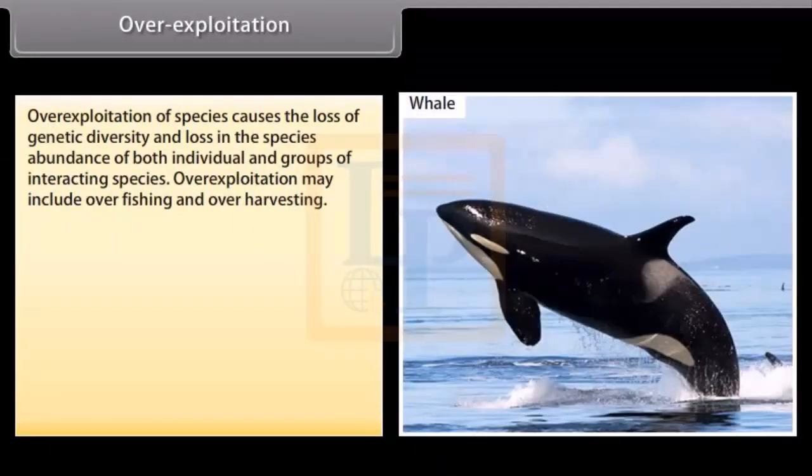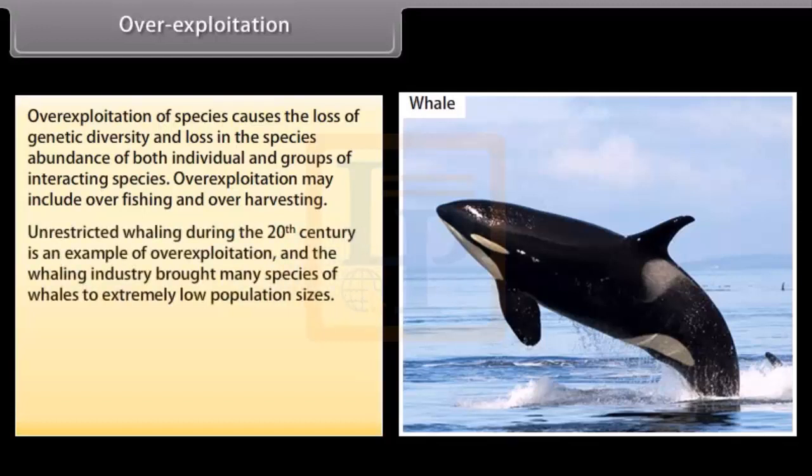Over-exploitation. Over-exploitation of species causes the loss of genetic diversity and loss in the species abundance of both individual and groups of interacting species. Over-exploitation may include over-fishing and over-harvesting. Unrestricted whaling during the 20th century is an example of over-exploitation, and the whaling industry brought many species of whales to extremely low population sizes.